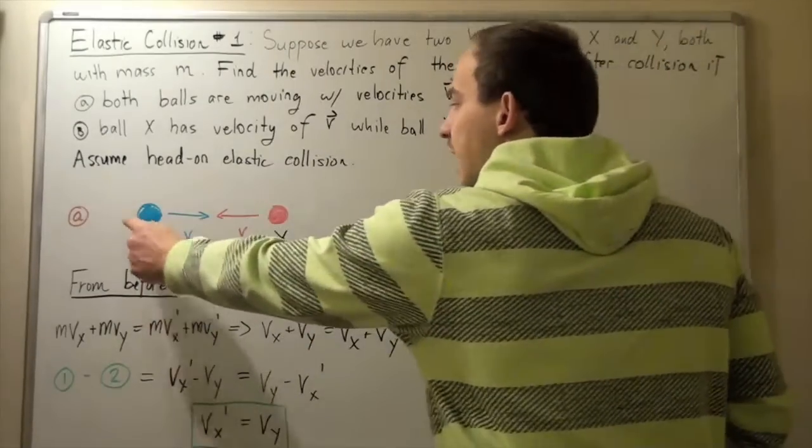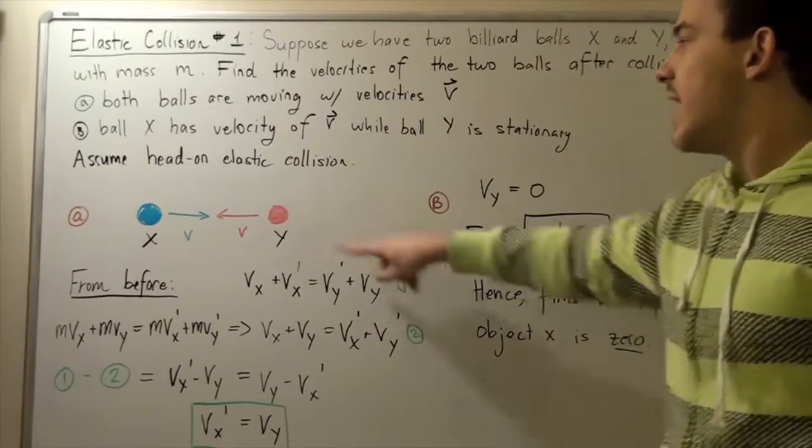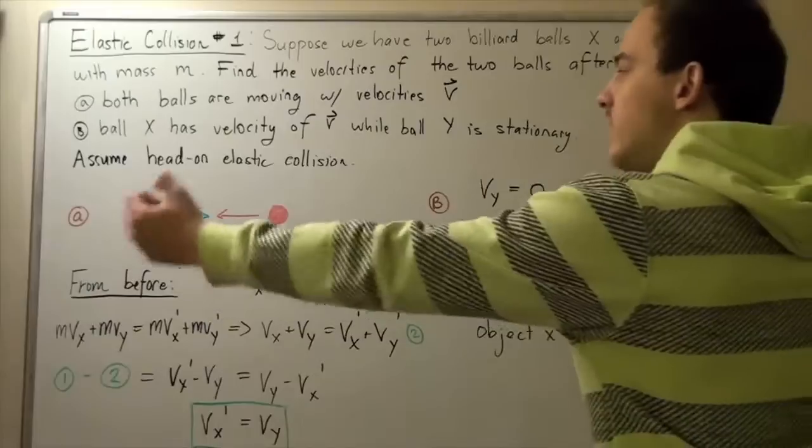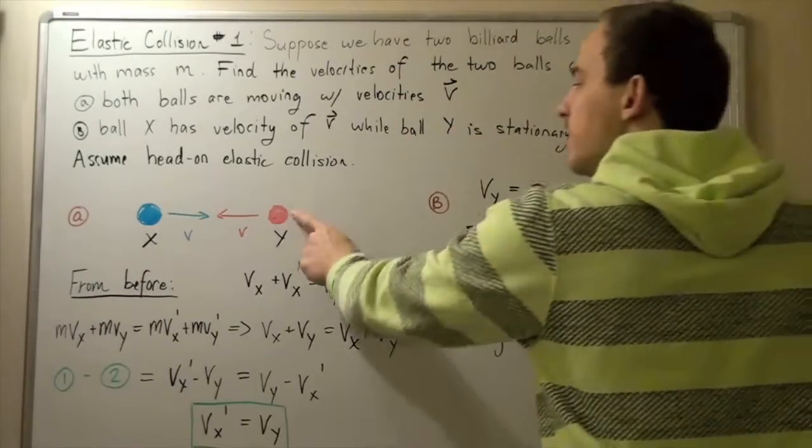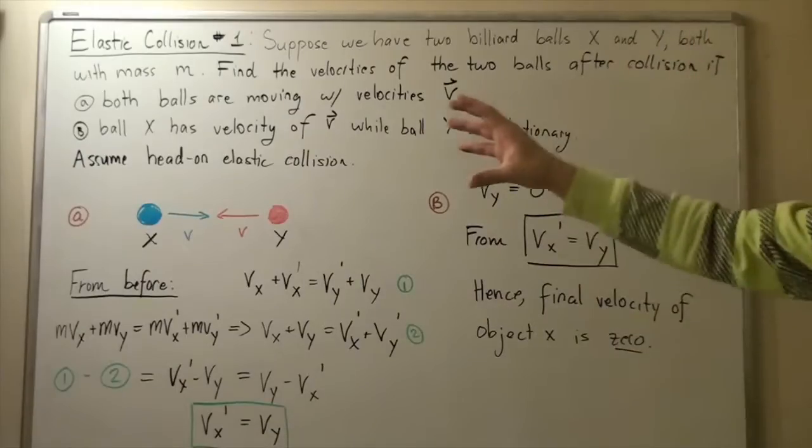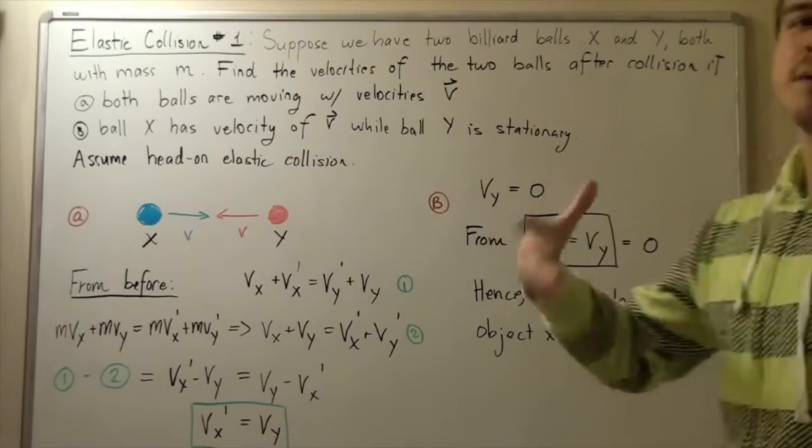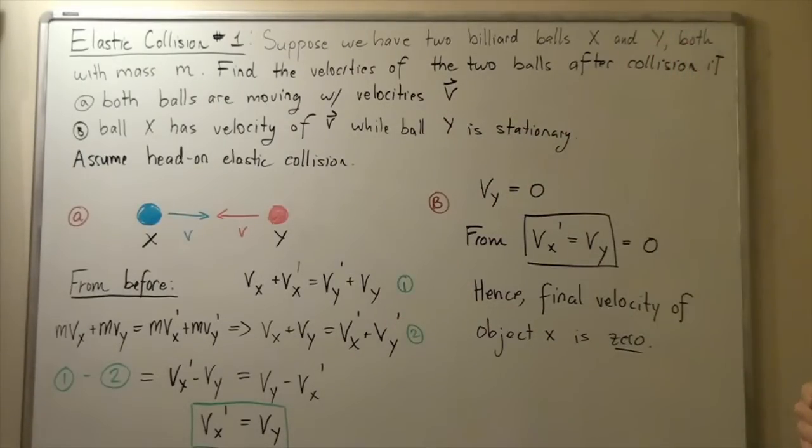If the initial velocity was 10 meters per second and this was stationary, once they make that collision, this will become stationary, but ball number two will begin moving in this direction with a magnitude of 10 meters per second.